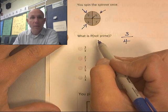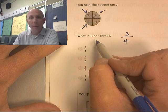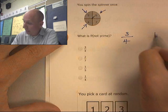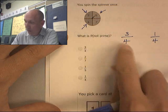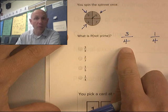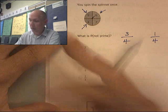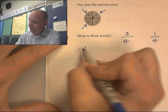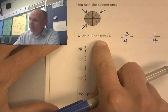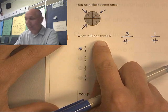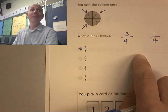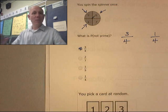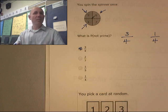Or I can think about it: what is the probability of getting a prime? Getting a prime is 1 in 4, so getting not a prime is 3 out of 4. These are opposite events, so 3 out of 4. That's the probability of getting a not prime, which is the same thing as getting a composite.